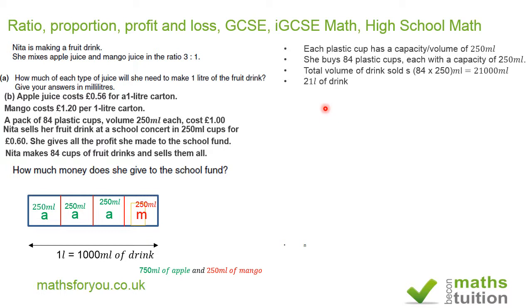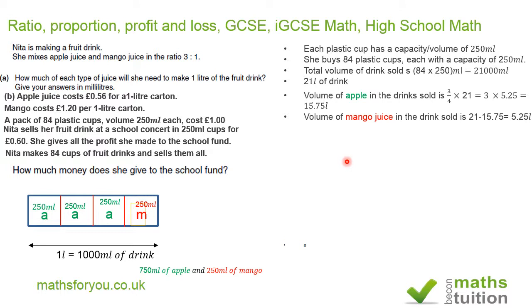Not forgetting that three quarters of each litre of drink is apple juice, the volume of apple juice in 21 litres of drink is three quarters of 21 litres, which gives 15.75 litres. Since apple juice is 15.75 litres out of 21 litres total, the volume of mango juice in the drink is 5.25 litres.